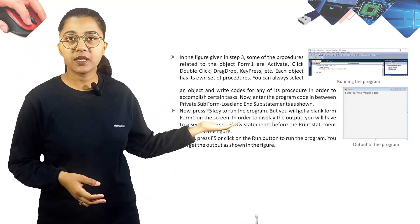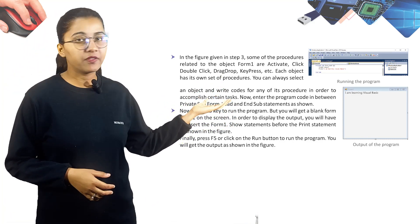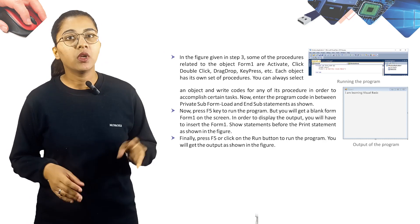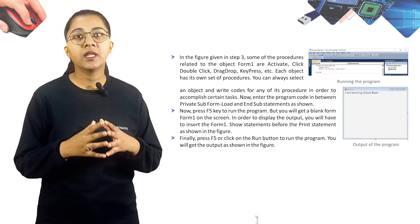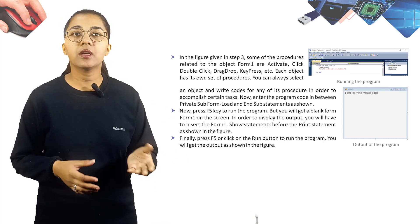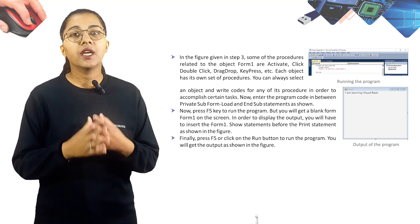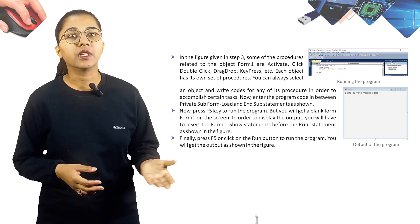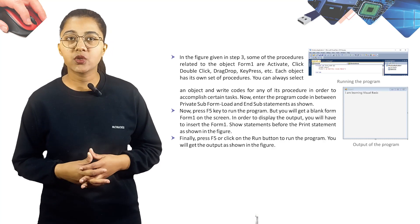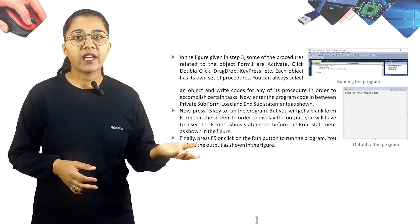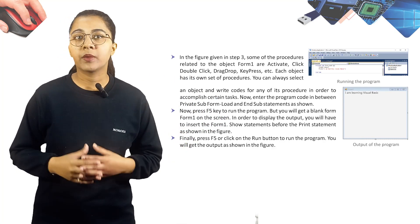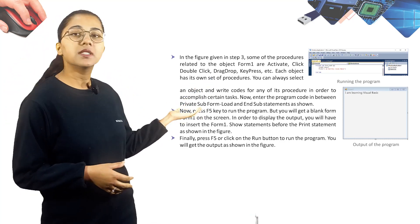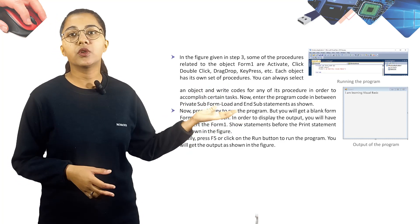Enter the program code between the Private Sub Form_Load and End Sub statements. Press F5 to run the program, but you will get a blank form on screen. To display the output, insert the Form1.Show statement before the Print statement. Press F5 or click the Run button to run the program and you will get the output as shown.